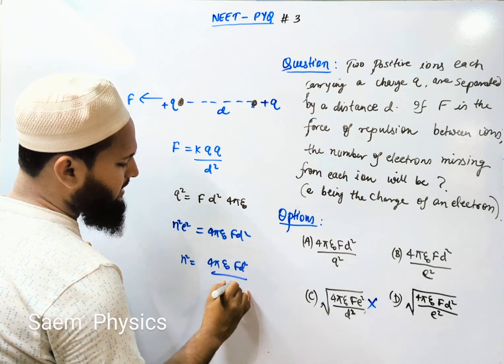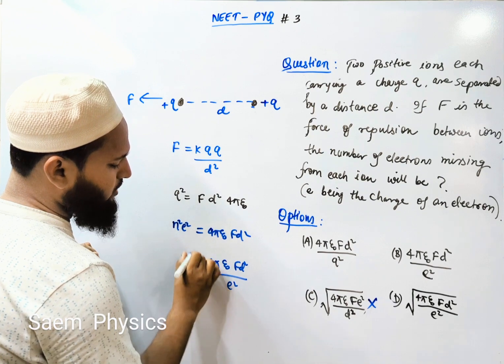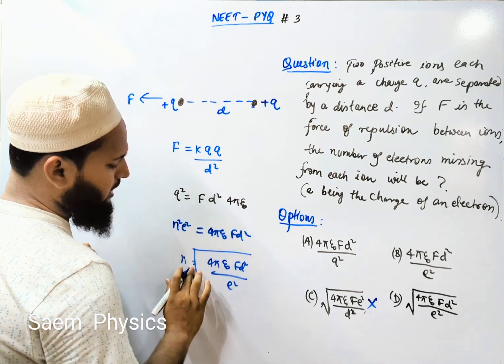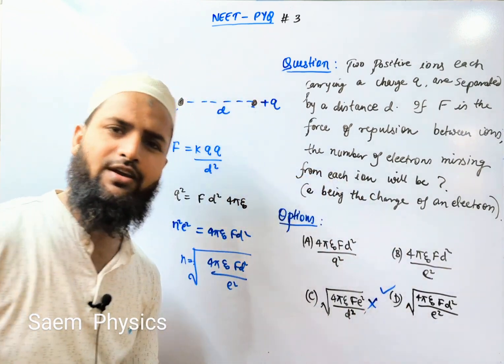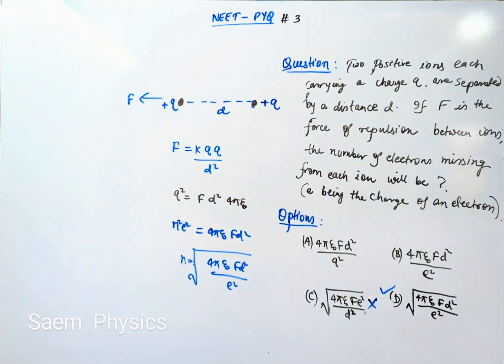F D square by E square. So our right answer is F D square by E square, option number 4. We'll get the next question.